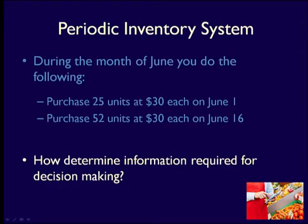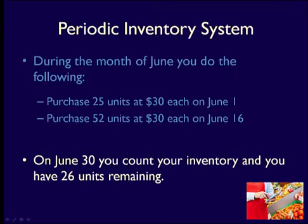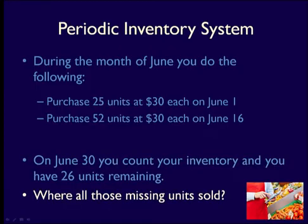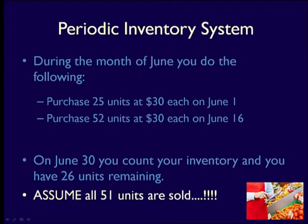So, how do you find out all this information? Periodically, like on June 30th, you have to count your inventory. In this case, you discover that you have 26 units remaining. You bought 77 units and you only have 26 remaining, so 51 are gone. The question then becomes, did you sell all of those 51 units or were some stolen? Actually, when you use the periodic inventory system, you assume that all the inventory gone has been sold. That's because using this system, you have no way of knowing whether items have been stolen, since you never track decreases in inventory when you sell it.